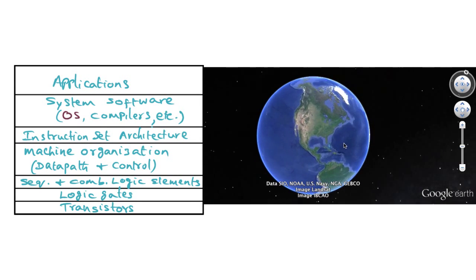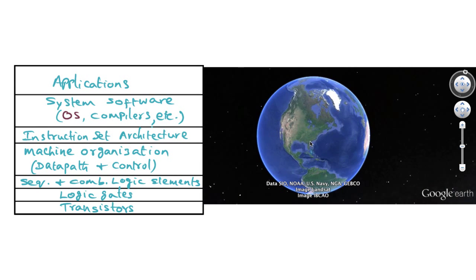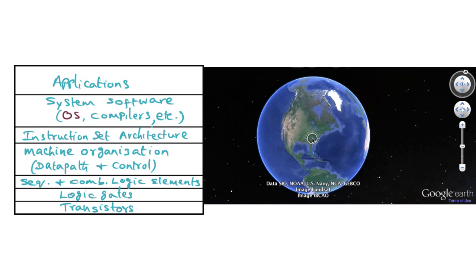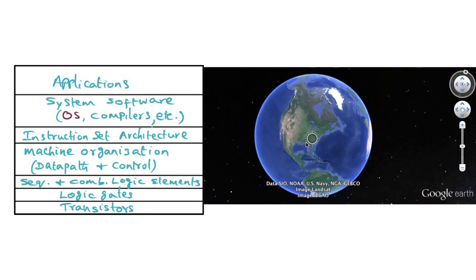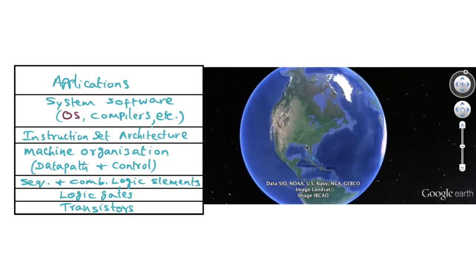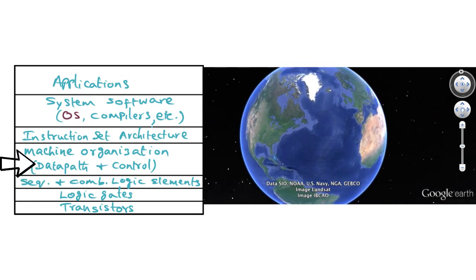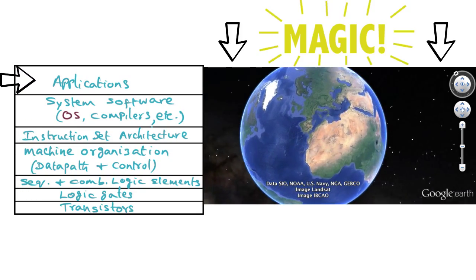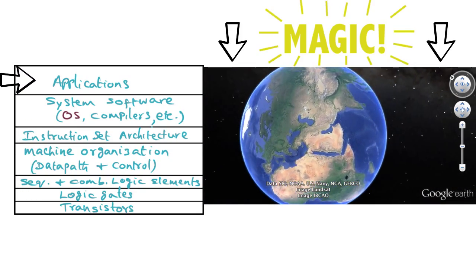An application such as Google Earth sits at the top of the hierarchy, and its code for tracking the mouse movement on the screen, written in whatever high-level language, is compiled into the instruction set and traverses the rest of the hierarchy, and magic happens on the screen.